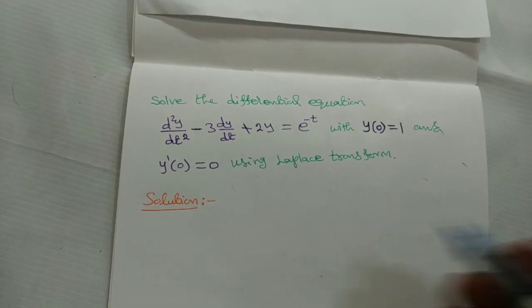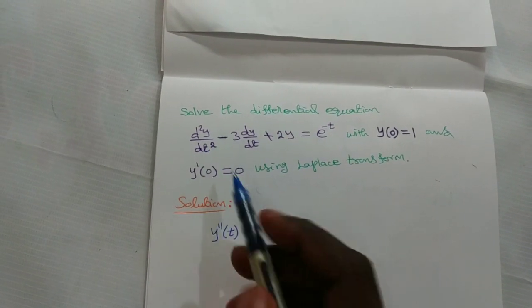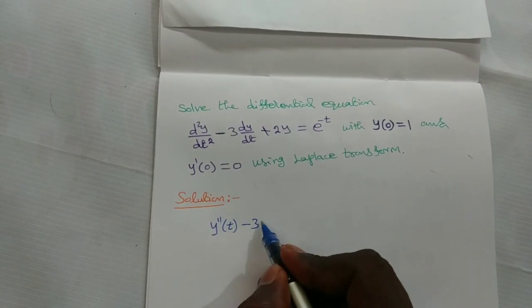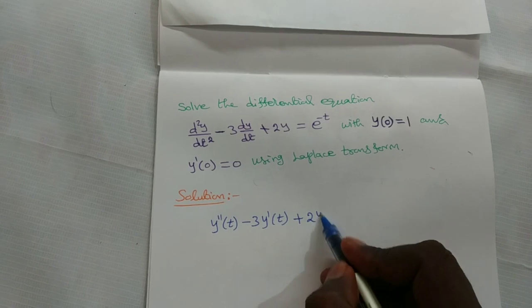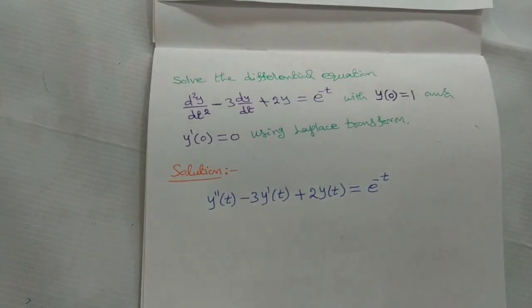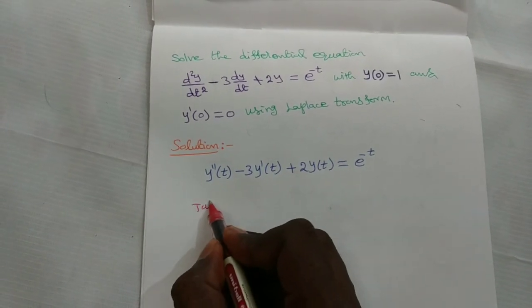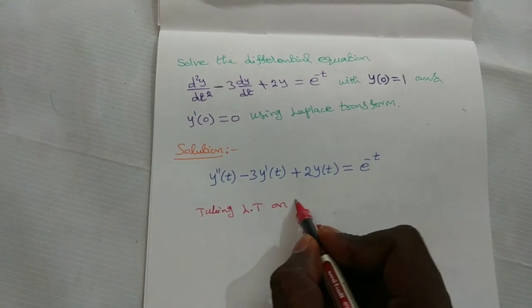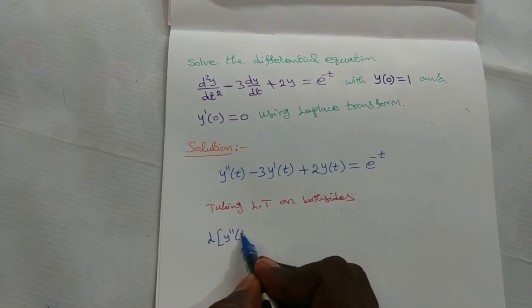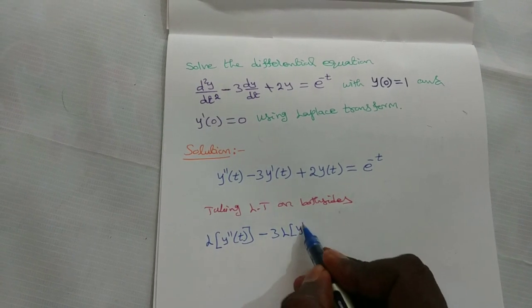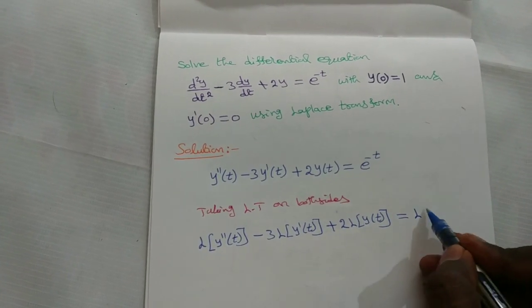The given differential equation can be rewritten as y double dash of t minus 3 into y dash of t plus 2 into y of t equals e power minus t. Now by the Laplace transform method, taking Laplace transform on both sides gives L of y double dash of t minus 3 into L of y dash of t plus 2 into L of y of t equals Laplace transform of e power minus t.